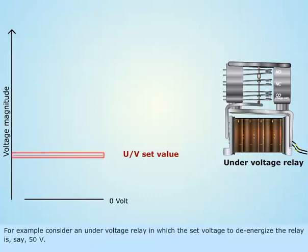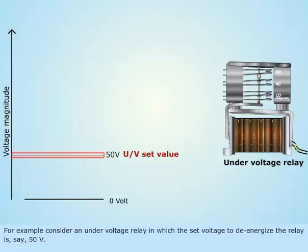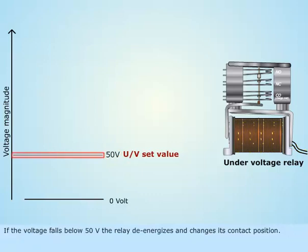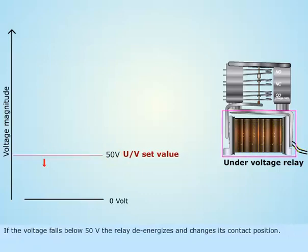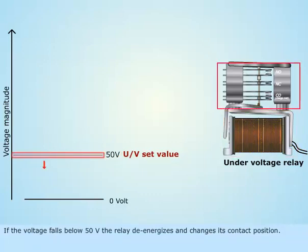For example, consider an under voltage relay in which the set voltage to de-energize the relay is 50 volts. If the voltage falls below 50 volts, the relay de-energizes and changes its contact position.